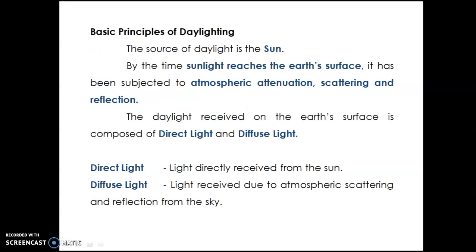For this we have few basic principles of daylighting. The source is going to be the sun. The sun reaches earth's surface through all the atmospheric layers, and while entering through those layers it undergoes a lot of scattering, reflection, and modulation in the beams. When it reaches inside, the light gets divided into direct light and diffused light. Direct light is received from the sun directly, and diffused light is scattered or reflected from the sky.